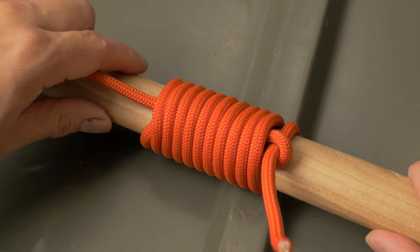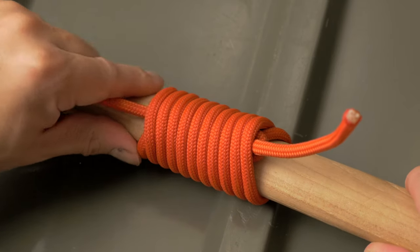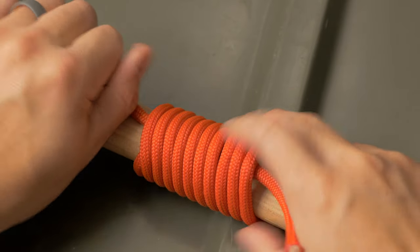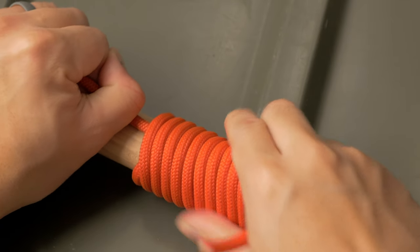At this point you're going to pull on the standing end. The standing end is going to suck the working end into the coils. The tension on the coils is what's going to keep everything together and tight.